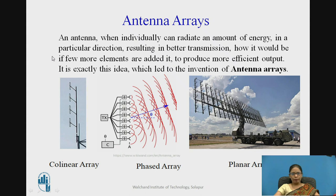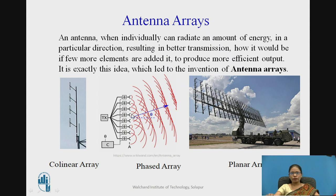An antenna individually radiates energy in a particular direction. For better transmission, adding more elements produces more efficient output with more gain — that is the idea which led to the invention of the antenna array. A collinear array has antennas placed in a line. A planar array forms a matrix arrangement. In a phased array, different antennas are provided excitation with specific phase shifts.